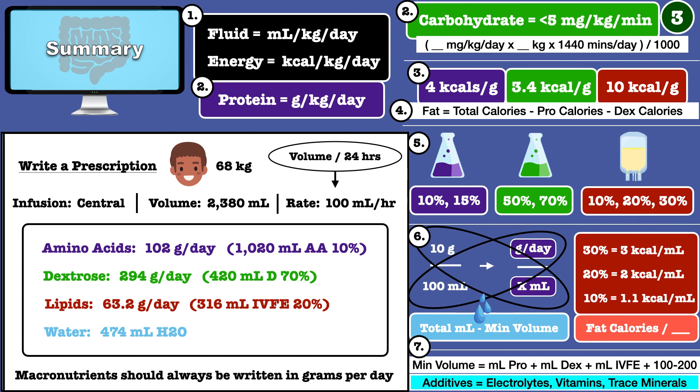Macronutrients should always be written in grams per day to avoid confusion or error if the percent stock solution or fat emulsion changes.